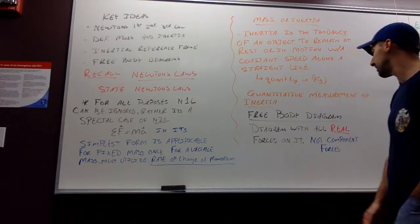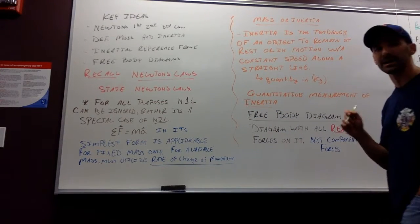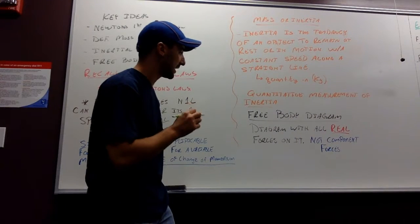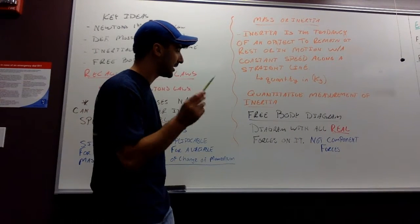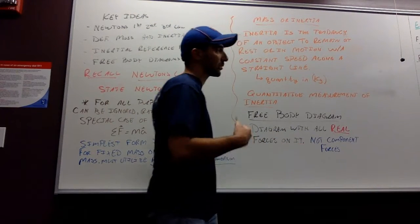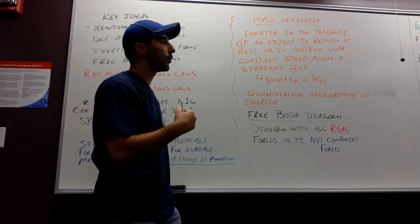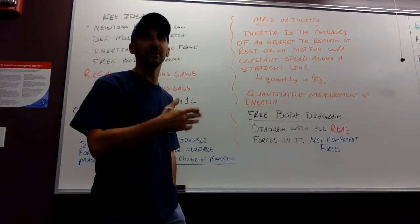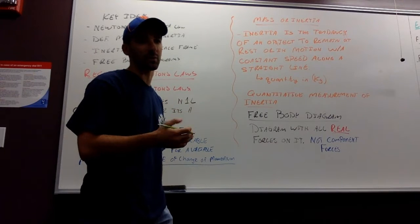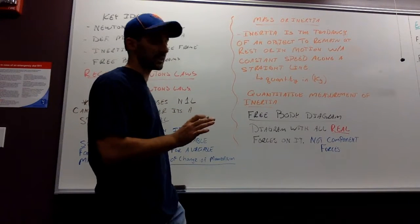Moving on to our free body diagrams. What a free body diagram is, is a diagram with all of the forces on an object. I very specifically say, not component forces. When we get into a couple examples, we're going to break objects down into components, y-components and x-components. But those are observable forces, not actual forces. So we need to be careful there.